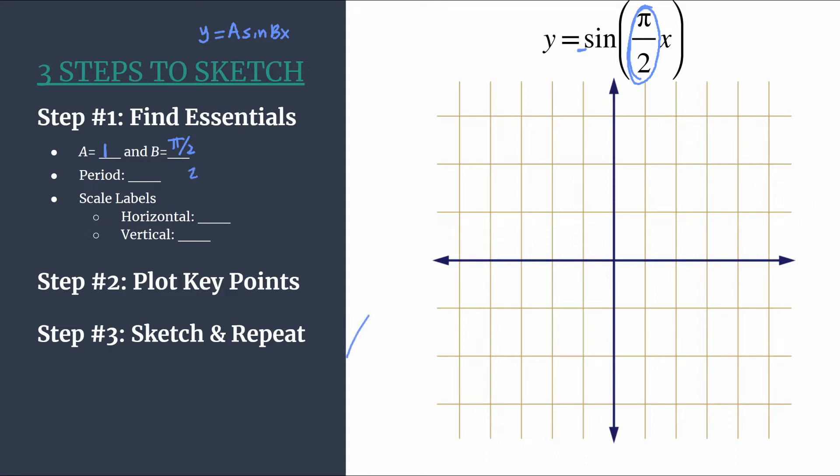So we have two pi divided by pi over two. Let's just flip that—we have two pi times two over pi. Well, we understand two pi is over one, you see that pi is a common factor that cancels out and our period is actually four here.